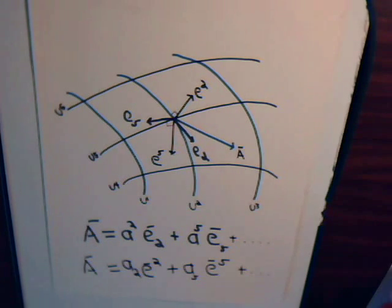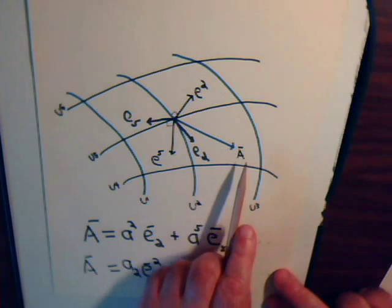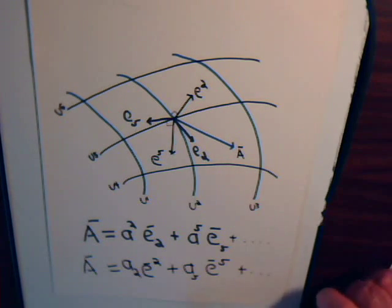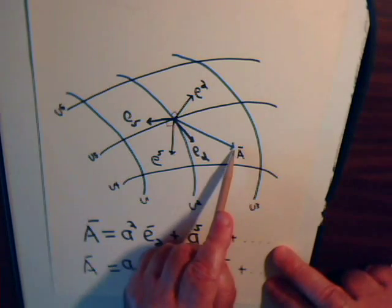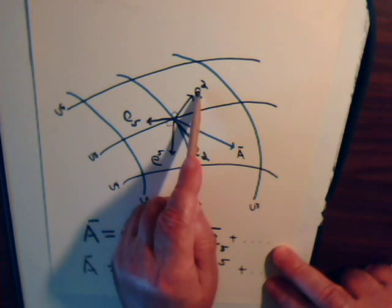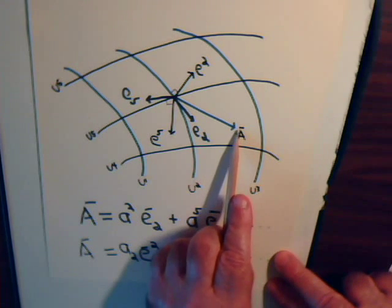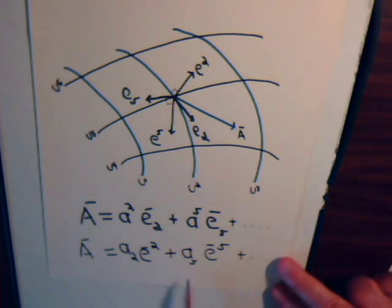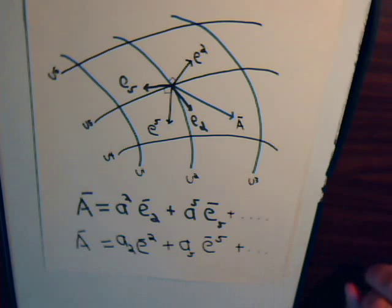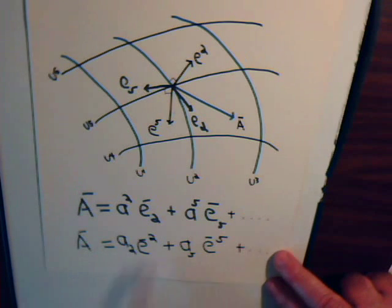These are what the contravariant components of a vector are — when the vector is being expressed in terms of its components along the axis vectors, or the vectors that are tangential to them. The other way, when we express this vector by considering its components along these orthogonal vectors — just taking orthogonal projection — and expressing that component with subscripts, this is a different way of expressing the same vector, and these are the covariant components of the vector.